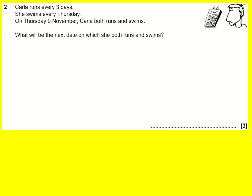There are a few ways of doing this question. The quickest is going to be to recognise that there's a lowest common multiple going on. She runs every three days, she swims every Thursday — that is every seven days — and she's swimming and running on the Thursday. So when is she next going to run and swim?